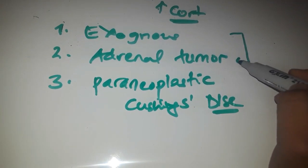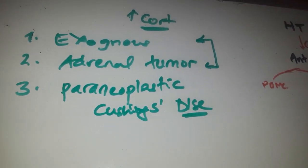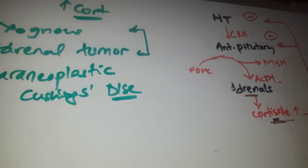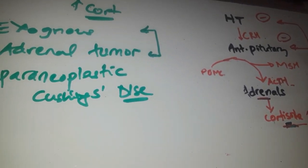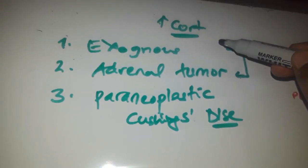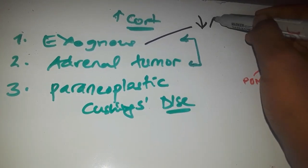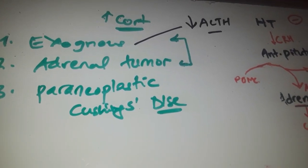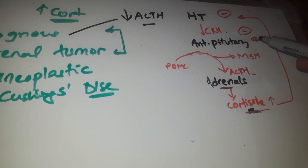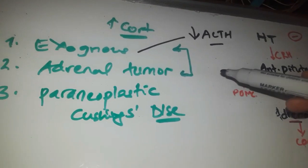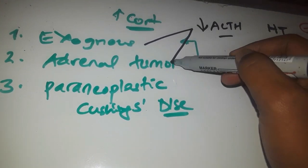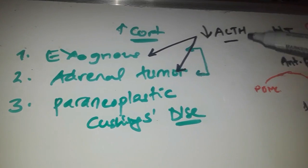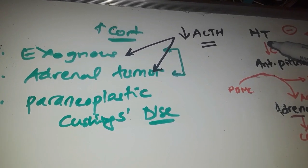Let's talk about the first two causes. With exogenous corticosteroids, the cortisol level in the body will be high, causing negative feedback inhibition of the hypothalamus and anterior pituitary, which decreases the amount of ACTH secreted. So in people taking exogenous corticosteroids, the amount of ACTH in their body will be low. Similarly, with adrenal tumors, the tumor secretes more cortisol, which negatively inhibits the anterior pituitary, thus decreasing the amount of ACTH produced. Adrenal tumors will also have a decreased amount of ACTH.